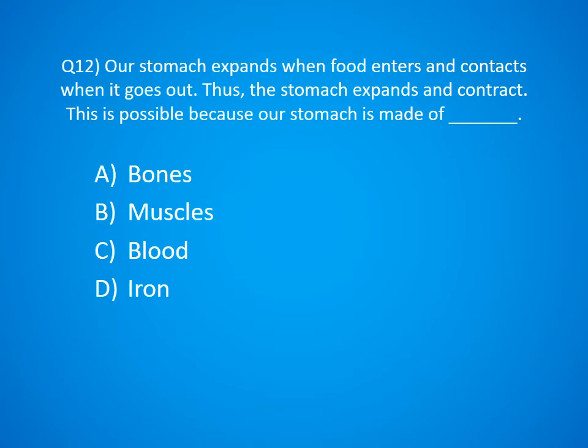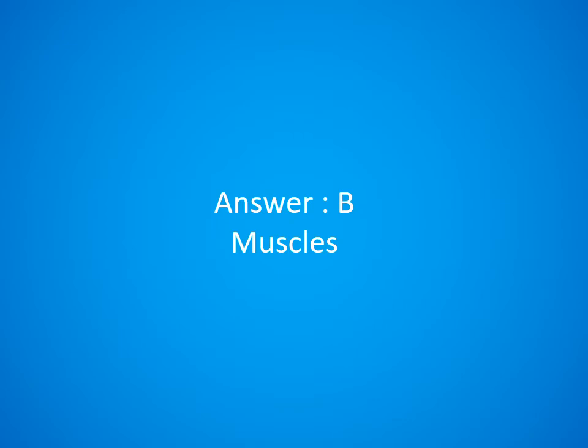Question 12. Our stomach expands when food enters and contracts when it goes out. Thus, the stomach expands and contracts. This is possible because our stomach is made up of: A. Bones, B. Muscles, C. Blood, D. Iron. The answer is Option B. Muscles.